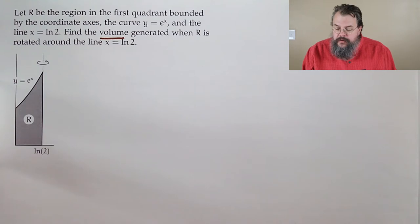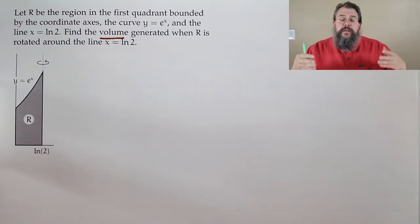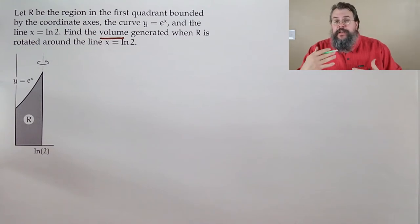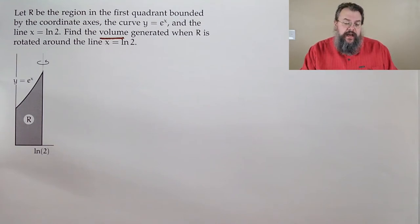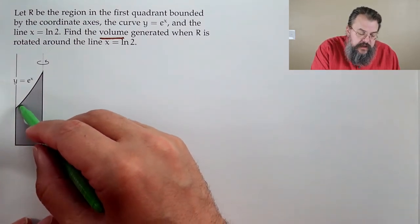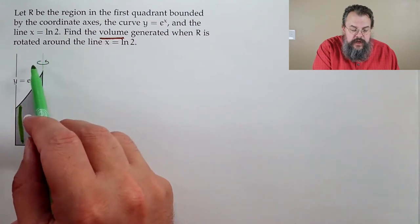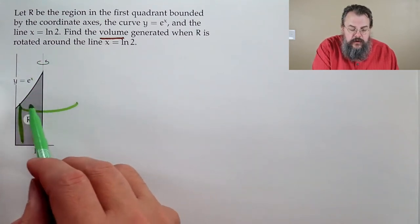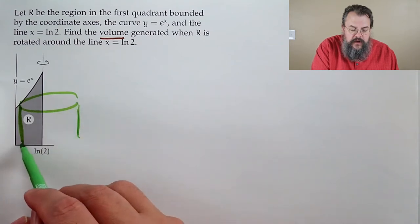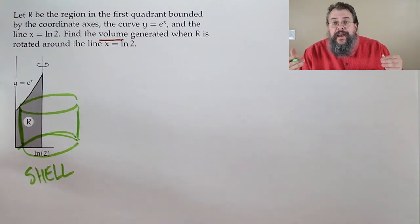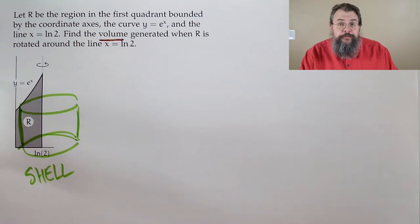Whenever I'm doing a volume problem, I like to break things into small pieces, find what's happening with each piece, and add them all together. Everything seems to hint we should integrate with respect to x. We have y as a function of x, and x goes between zero and log two. Looking at the shape we form, we see a little tiny can or cylinder or shell. This is a shell method problem for volumes.